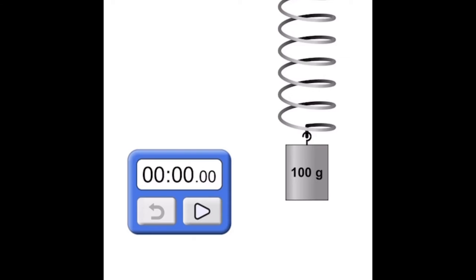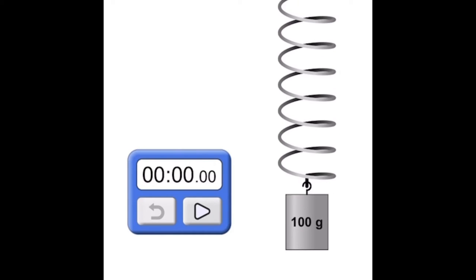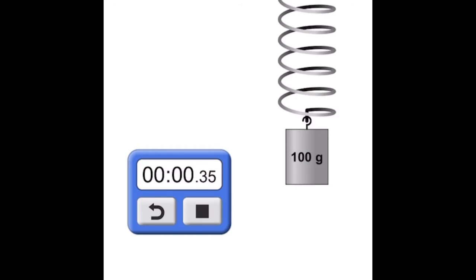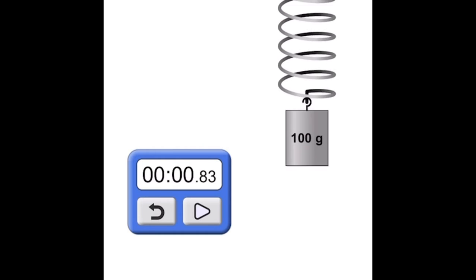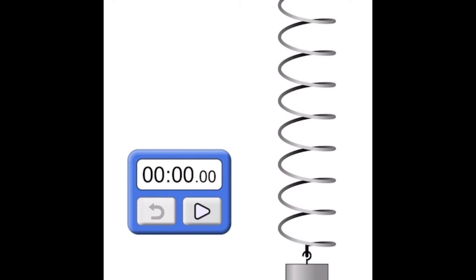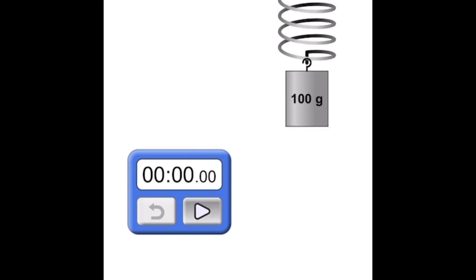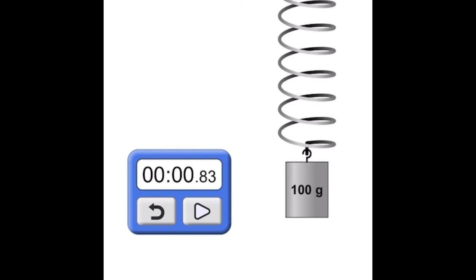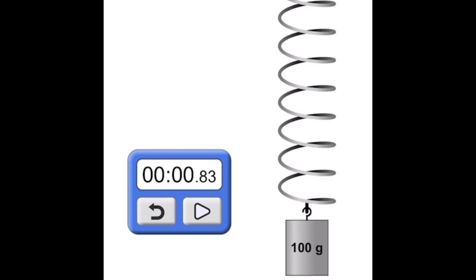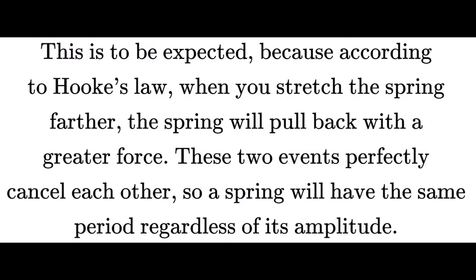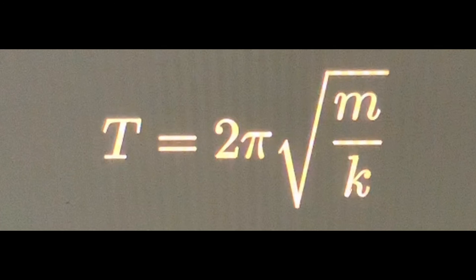I will stretch this spring and then release it, and record the period — around 0.83 seconds. Now I will reset it and stretch it to a farther length. It is still 0.83 seconds. This means that no matter how you stretch or compress the spring, it will have the exact same period. It turns out that the period T is equal to 2π times the square root of m divided by k. But why?